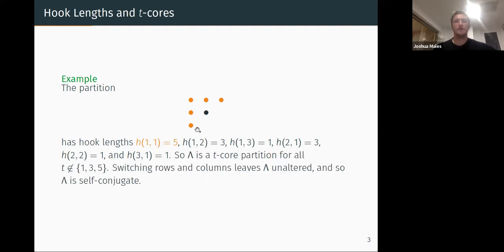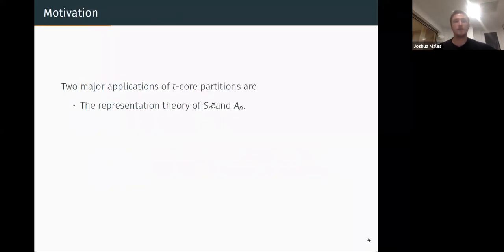So what does that mean? That means that this partition lambda is a t-core partition for all t that don't divide these numbers. So for any t not in {1, 3, 5} this is a t-core partition. Even better for us is that switching rows and columns here leaves lambda the same, so lambda is a self-conjugate partition. In particular this is an example of a self-conjugate seven-core of the number six.